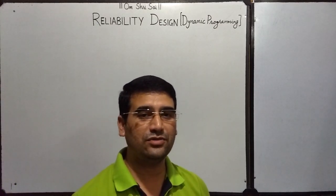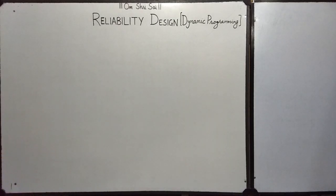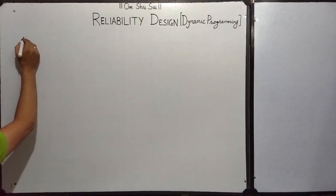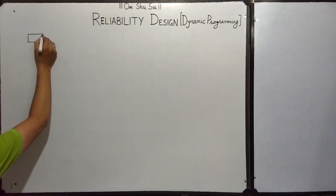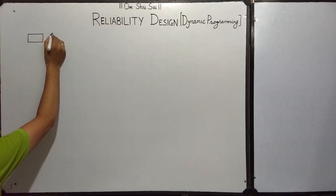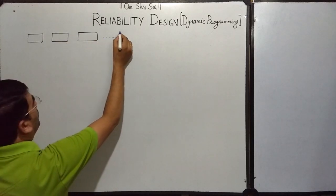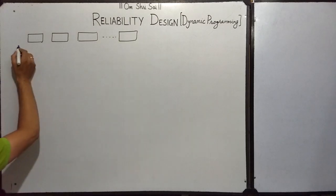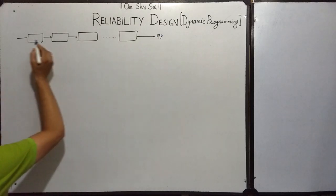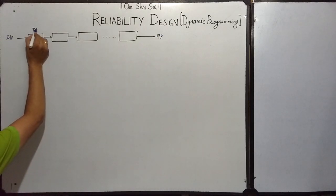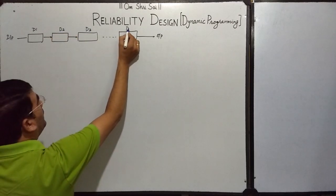Through this lecture, we will discuss how to use dynamic programming to solve the multiplicative objective function. First of all, we will discuss what is reliability design. For example, if we have a system consisting of a number of devices where the output of one device is the input for the next device, and finally we get the output at some stage. These are connected in series — device 1, device 2, device 3, and we can have n number of devices.